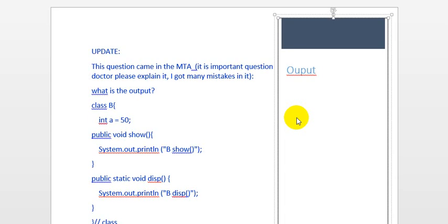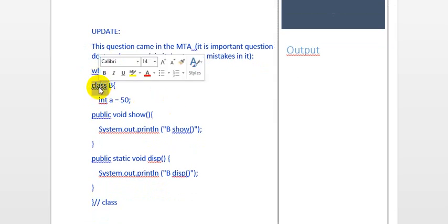Basically, whenever we want to look for an output, we will first see what the classes are, and we look for a class where we have the main method. We start tracing the code from the main method because, as we all know, the Java program starts execution from the main method. So first we look into the main method. But before we go to the main method, let's have a look at the classes.